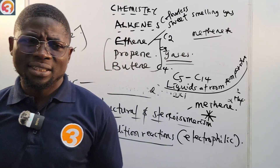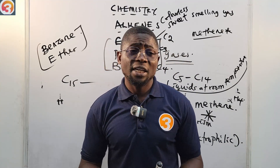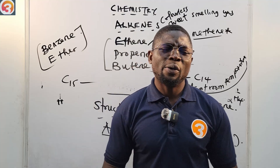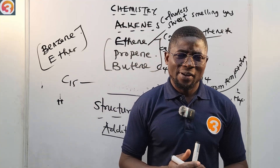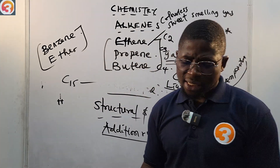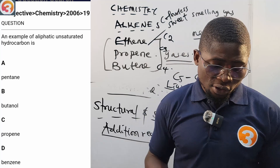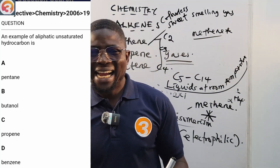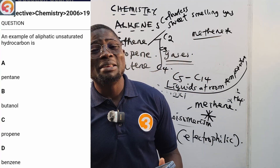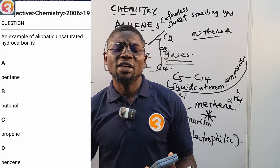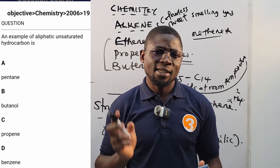In the next class we will talk about the nomenclature of alkenes, then the preparation of alkenes, then the reactions alkenes undergo, and finally the uses of alkenes. Now let's answer the 2006 question number 19: an example of an aliphatic unsaturated hydrocarbon. The answer is option C — propene — because propane is an alkane, while propene is an alkene and therefore an aliphatic unsaturated hydrocarbon. Please download the O3 Schools JAMB app from the Play Store and practice past questions. See you in the next class!